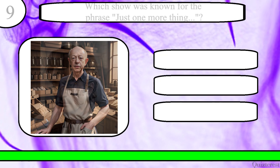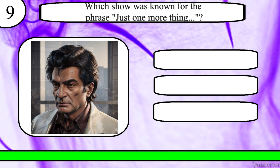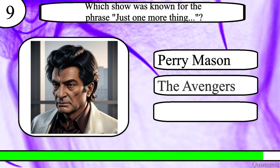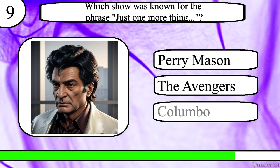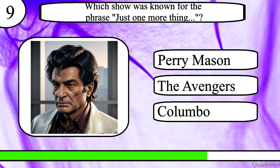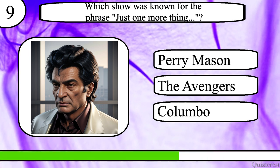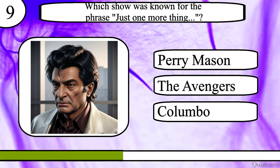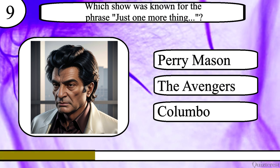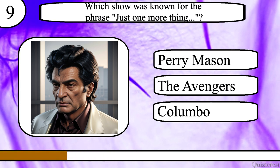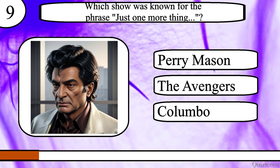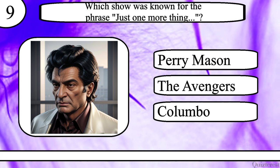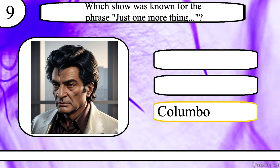Question 9. Which show was known for the phrase 'Just One More Thing'? Perry Mason, The Avengers or Columbo? The correct answer is Columbo.